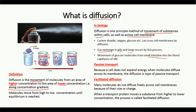Diffusion is a passive transport. Passive transport means that the process of diffusion does not require any kind of energy. A cell does not expend energy when molecules diffuse across its membrane, so this type of diffusion is called passive transport.